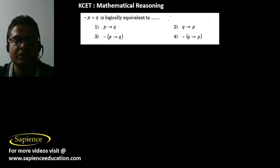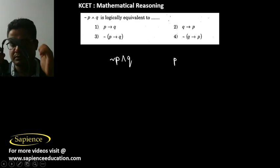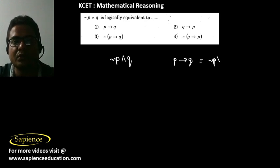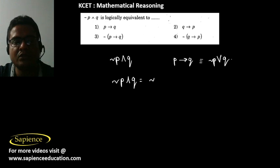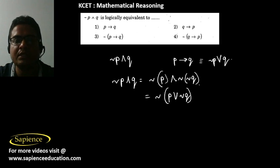For the next question, we need to simplify 'not P and Q'. Using De Morgan's law, not of (P and Q) can be written as not P or not Q.